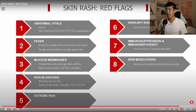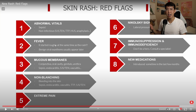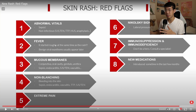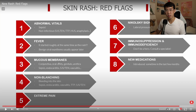Number one is abnormal vitals. Number two is fever, especially if it starts roughly at the same time as the rash, as benign viral exanthems usually have onset of a fever and then the rash a few days later. Number three is any involvement of mucous membranes, which is specifically very concerning for things like SJS or TEN.